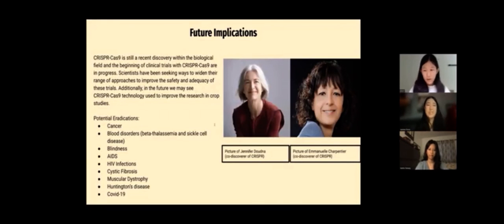From all of this, there are future implications. CRISPR-Cas9 is still a recent discovery within the biological field, and the beginning of clinical trials with CRISPR-Cas9 are in progress. Scientists have been seeking ways to widen their range of approaches to improve the safety and adequacy of these trials. Additionally, in the future, we may see CRISPR-Cas9 technology used to improve the research and crop studies. Some potential eradications that are being worked with CRISPR-Cas9 right now are cancer, blood disorders, blindness, AIDS, HIV infections, cystic fibrosis, muscular dystrophy, Huntington's disease, and COVID-19.